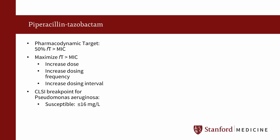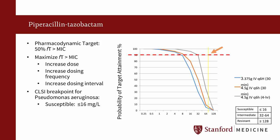In order to maximize time over MIC, one could either administer a higher dose, increase the dosing frequency, or increase the duration of infusion. If the MIC of the pathogen is 32 mg/L, the piperacillin-tazobactam regimen of 3.375 grams every six hours has approximately 30% chance of attaining the target goal of free drug above the MIC for 50% of the dosing interval. Increasing the dose to 4.5 grams every six hours improves target attainment to about 50%. When you prolong the infusion of 4.5 grams every six hours to be administered over four hours, the probability of target attainment increases significantly, upwards of 90%. This method of prolonged or continuous infusion of time-dependent antibiotics allows for a higher probability of achieving the goal pharmacodynamic target compared to intermittent dosing, and can be especially beneficial in the critically ill or those infected with organisms that have a higher MIC.